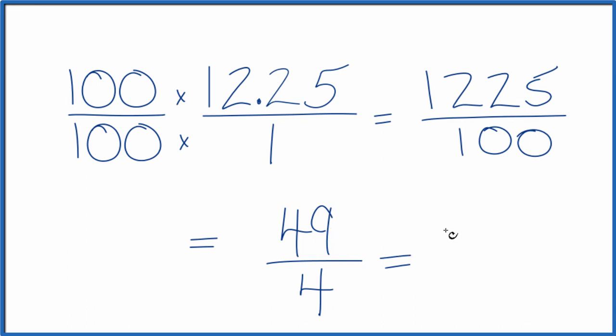4 goes into 49 twelve times. 12 times 4 is 48 with 1 left over. Bring the 4 across. So 12 and 1 fourth. So either way, both of these are fractions for 12.25.